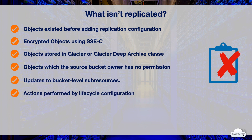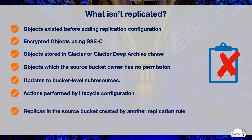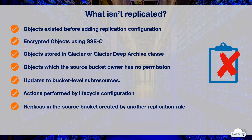Actions performed by lifecycle configuration won't be replicated. For instance, if lifecycle rules are only enabled on the source bucket, S3 only creates delete markers for expired objects but doesn't replicate those markers. If you want the same lifecycle rules applied to both buckets, you need to enable them on both. S3 also doesn't replicate objects that were created by another replication rule — you can replicate objects from a source bucket to only one destination bucket.